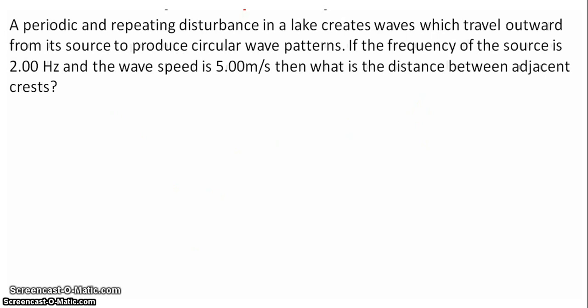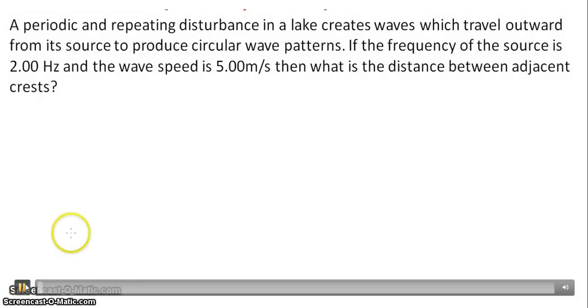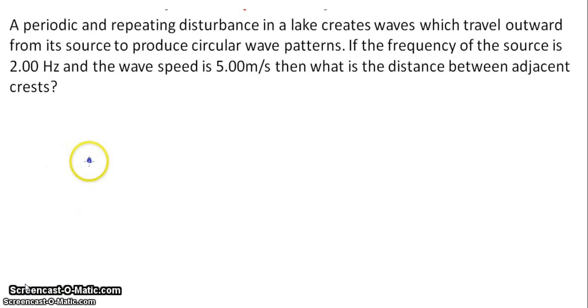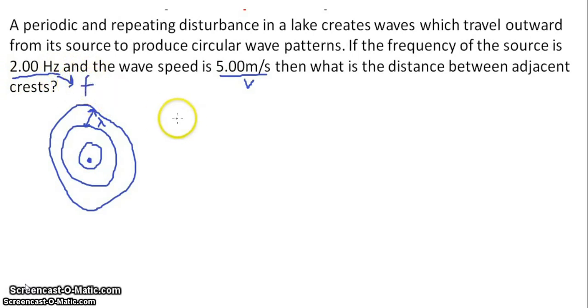In this question here you're looking at a periodic disturbance in a lake. So basically you're looking at an oscillation that is creating water waves or ripple waves around the oscillating point. So it's oscillating up and down. And if you imagine ripples in a pond you end up getting circular wave fronts of peaks emanating outward from our oscillation. Now the distance between two peaks on a ripple tank is the wavelength. And we're told that the speed of the wave in water is 5 metres per second and the frequency is 2 hertz. Can you see where this is going?